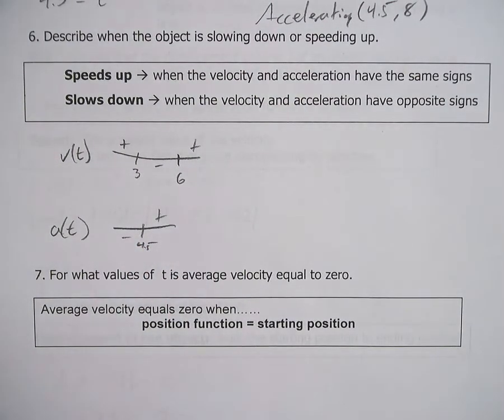So it speeds up. Let's do speeds up first. It speeds up when the velocity and acceleration have the same signs. Okay. Now when you're doing this, you're looking at at what point do these things share a sign? So it could be positive or it could be negative. You could be speeding up in a negative direction. That's okay.